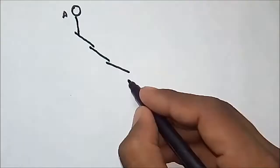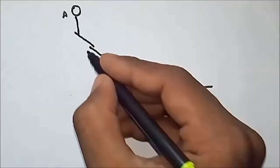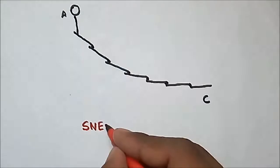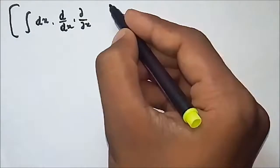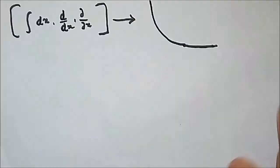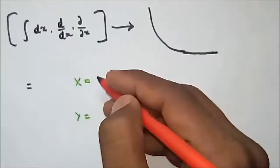This path of the quickest descent or the shortest time can be derived easily using Snell's law, which he found to be a cycloid. This was later proved using calculus, but the result was the same. The curve for the quickest descent was found to be a cycloid.